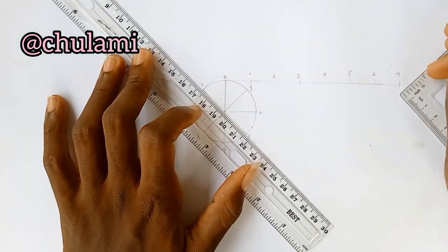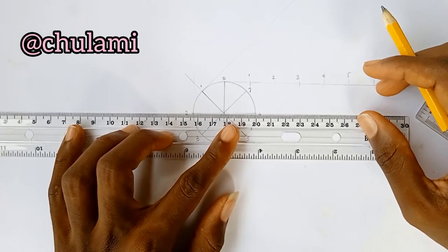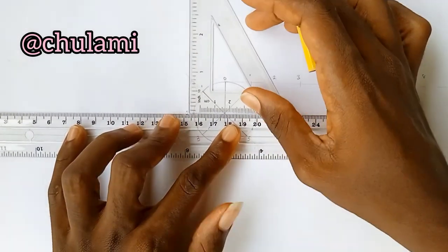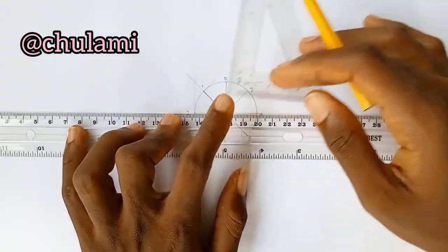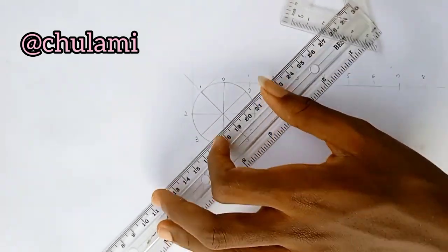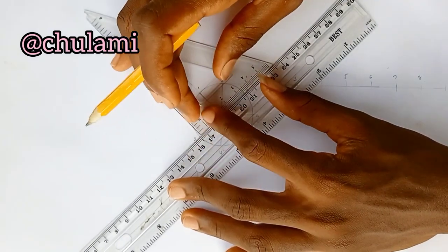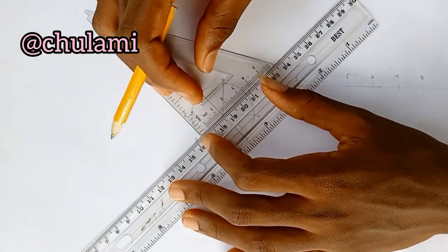Now this is for two. At two you put a ruler and then get a straight faint line. Do the same thing to three. At three you put a ruler and draw a tangent line.